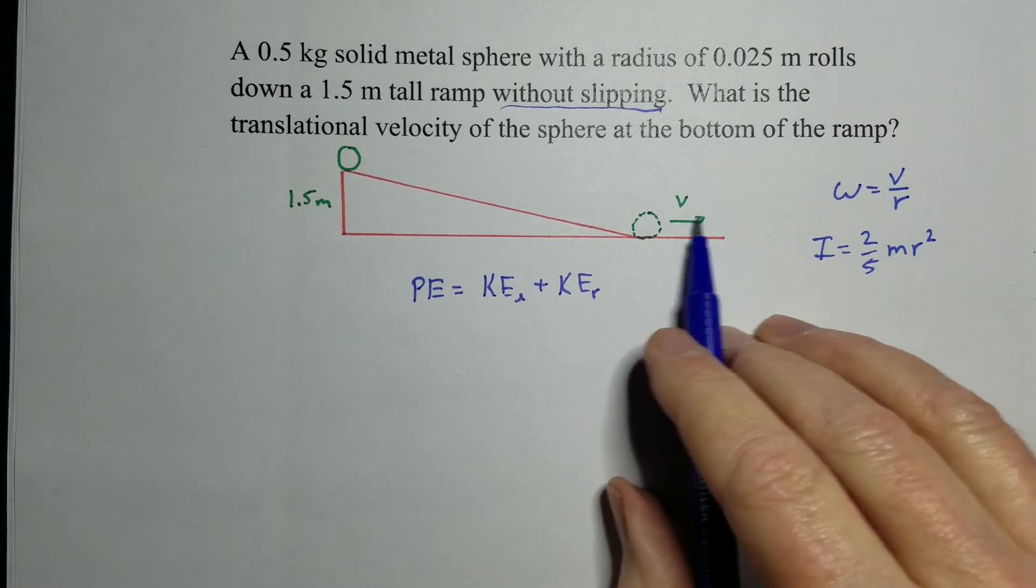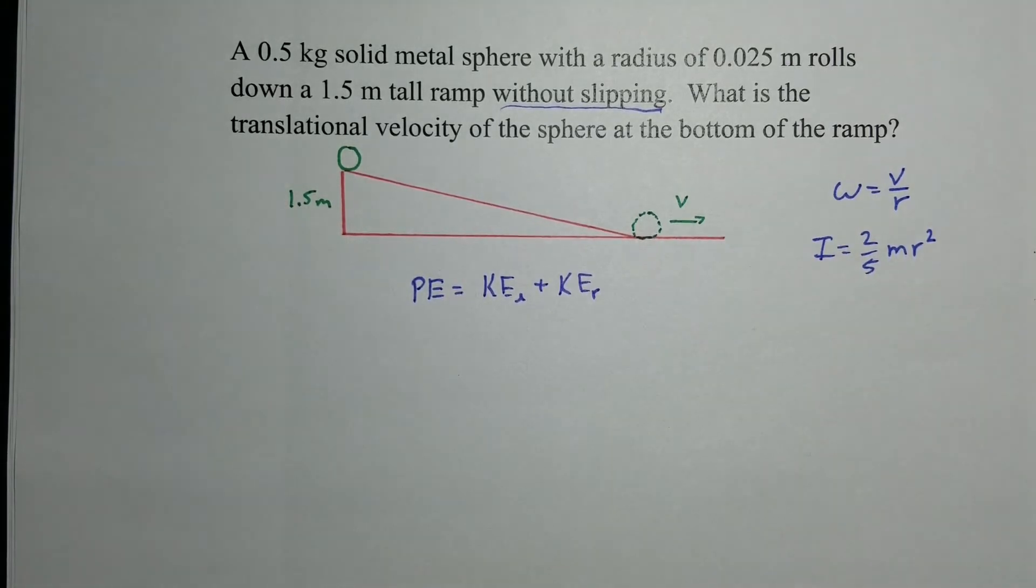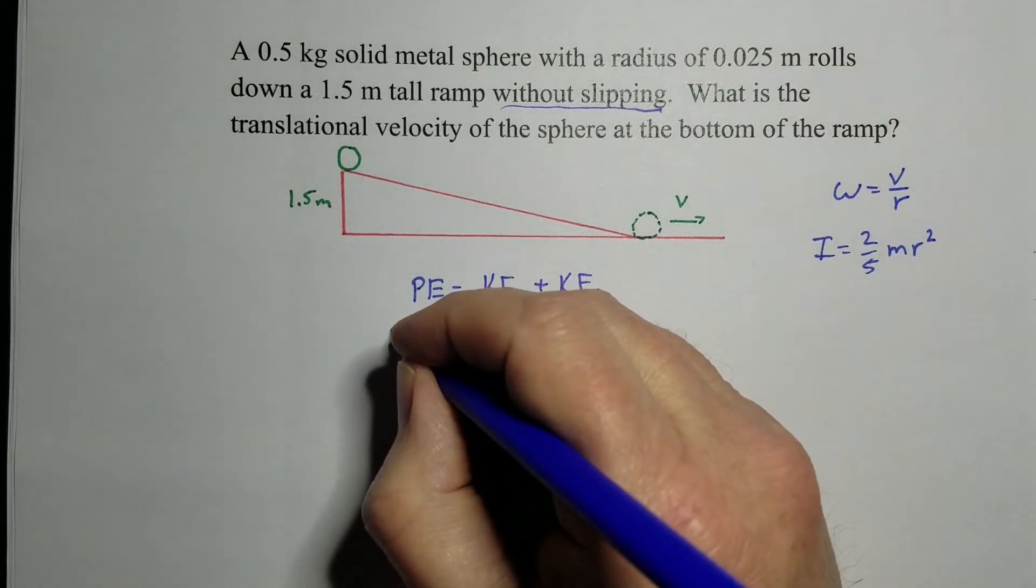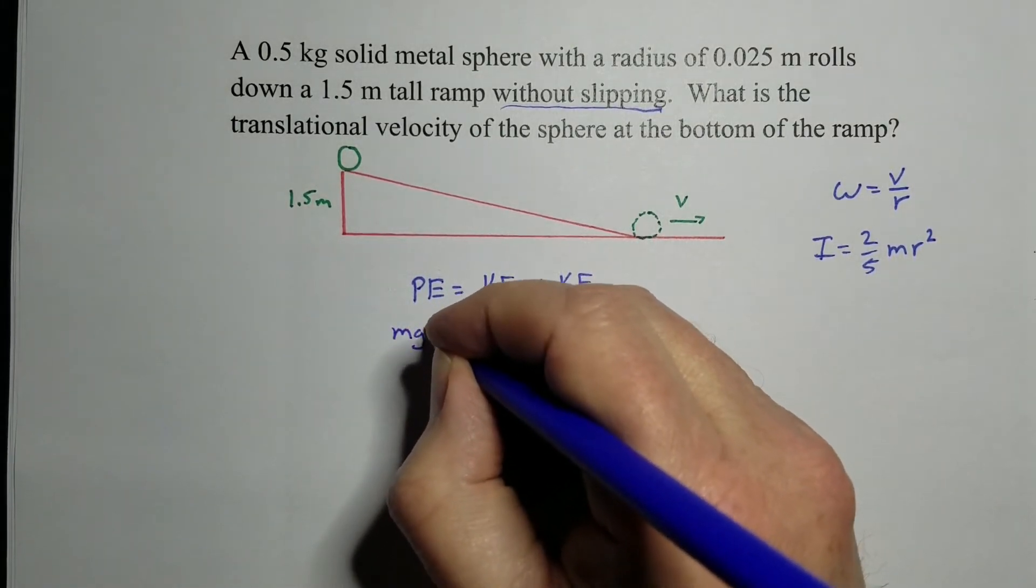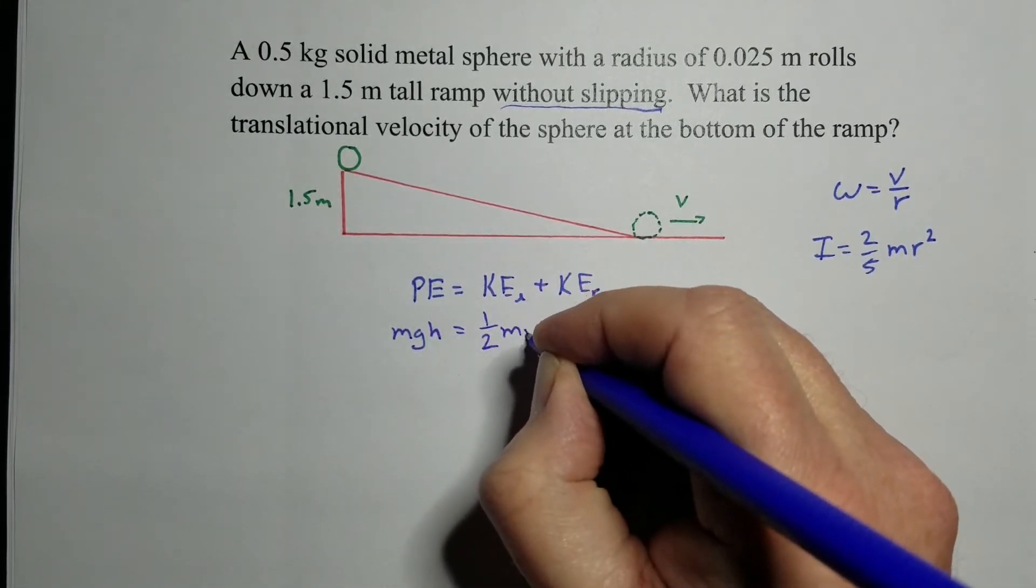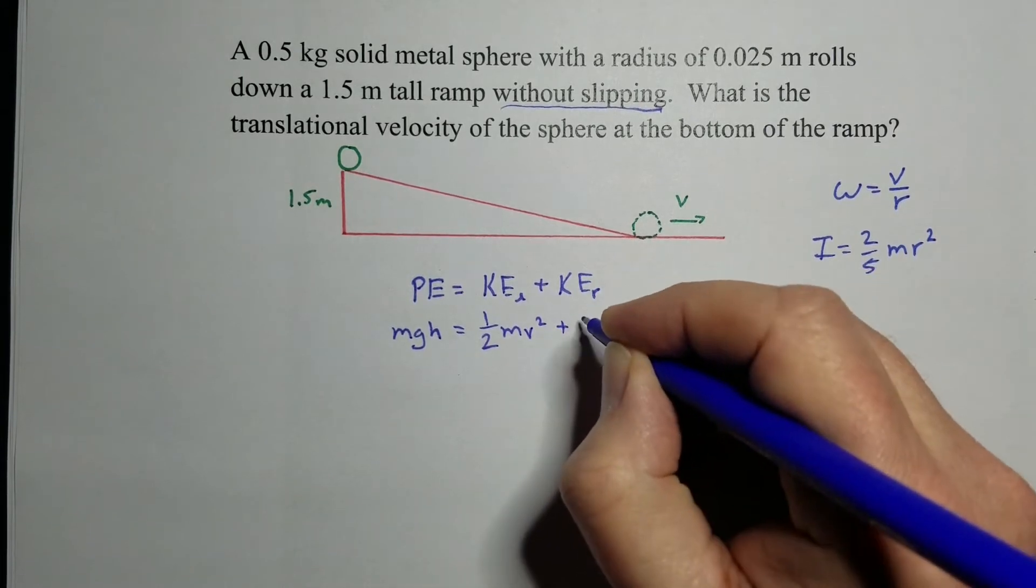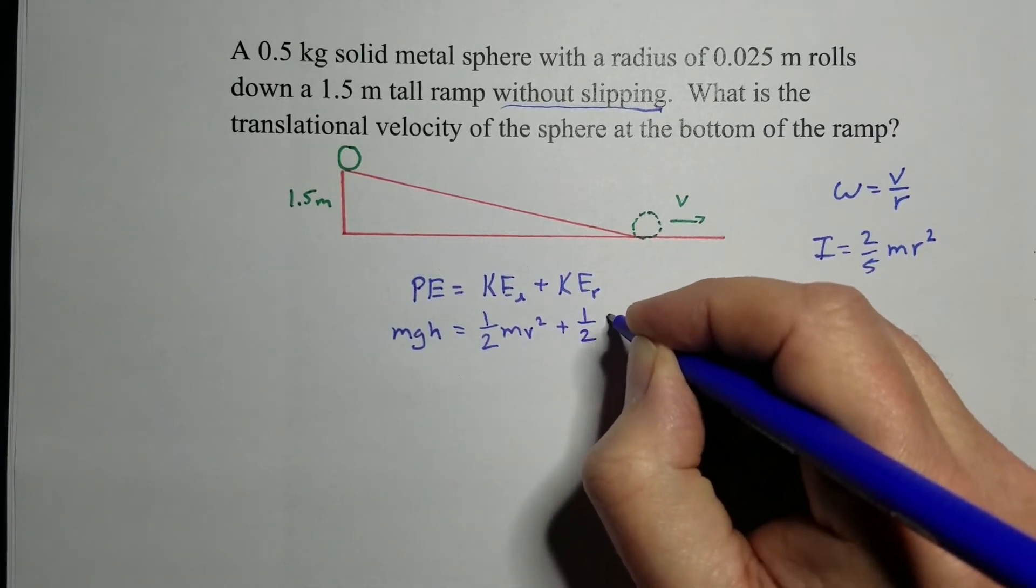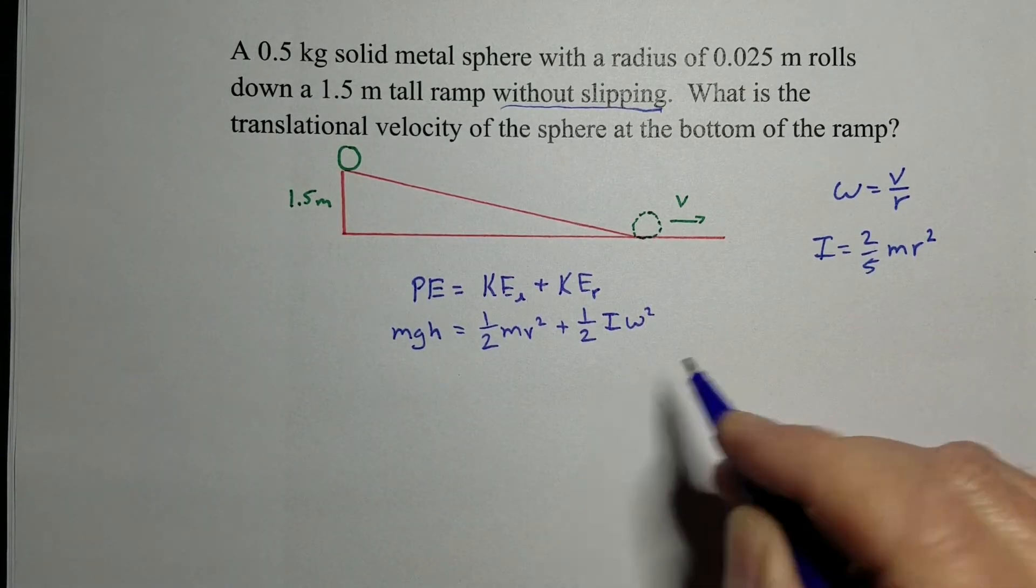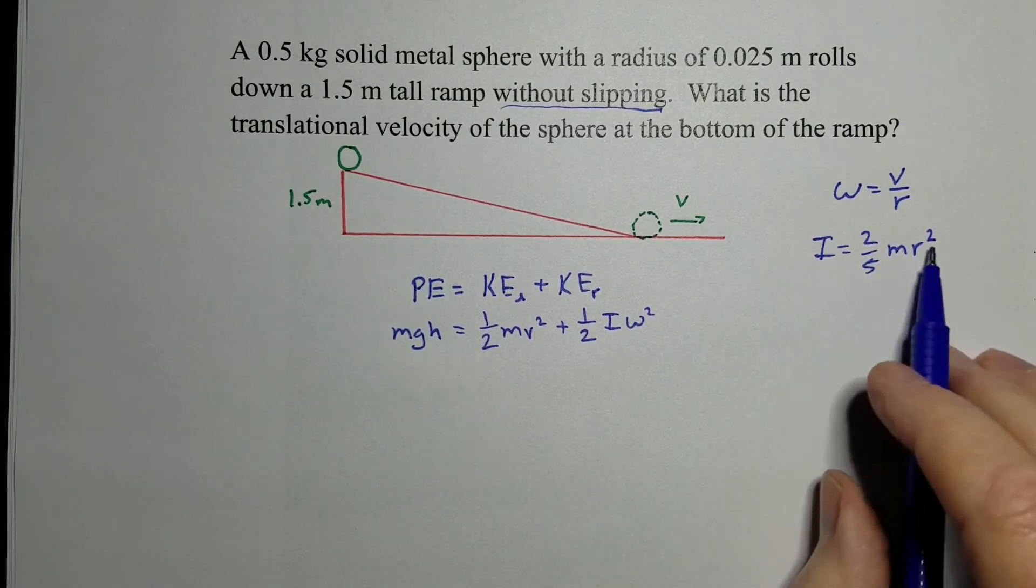And so we'll have kinetic energy from the linear component, plus the kinetic energy from the rotational stuff. And so both of those together will give you the total energy at the bottom. But we actually want to know the speed it's moving across the floor with. So we're going to start solving things. So first of all, potential energy is mass times gravity times height.